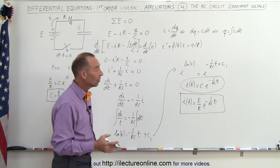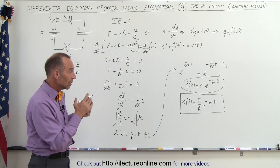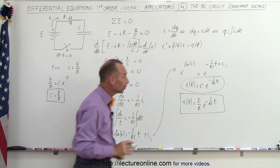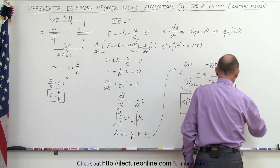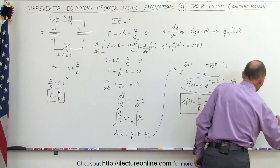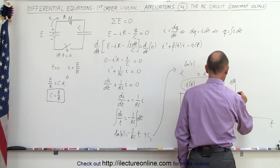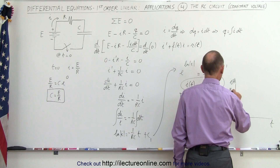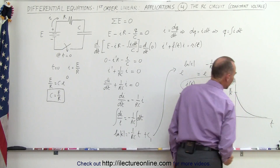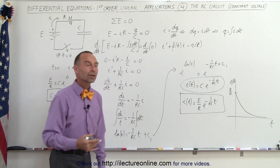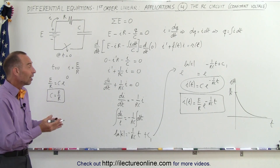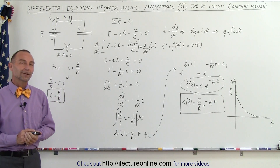Using our initial condition we know our constant, so we can say the current as a function of time equals E over R times e to the minus 1 over RC times t. If we graph that equation, with current on the vertical axis and time on the horizontal axis, initially we have E over R of current at t equals zero, and then it exponentially decays toward zero as time becomes very large. That is the solution to this differential equation and how we solve circuits in this type of analysis.